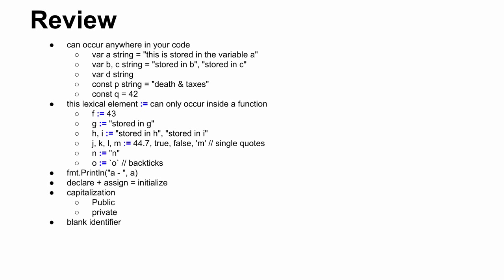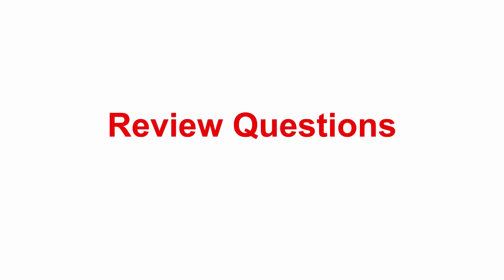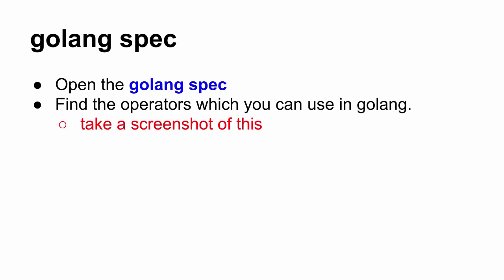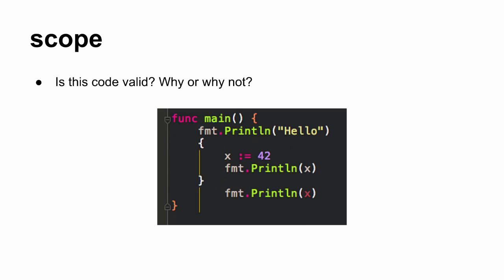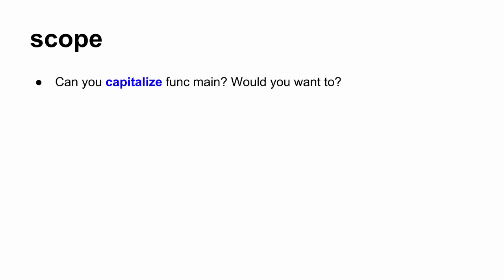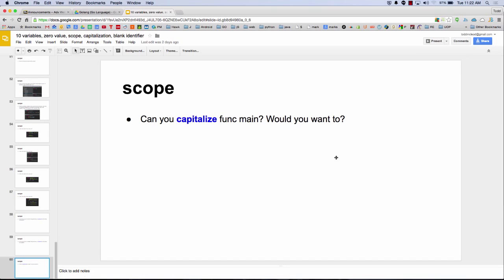A little bit of review — colon equals is the big takeaway, the shorthand notation for variables. Then scope and capitalization — that's a big takeaway. And then you've got a bunch of review questions which you should take a look at and answer in your homework. That is all of presentation 10. Questions? Keep rolling.